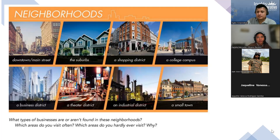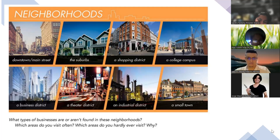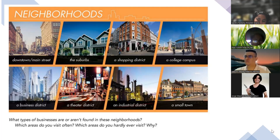A college campus — maybe restaurants inside the campus, cafeterias as well. A business district — because it's a business district. A theater district — a movie theater, et cetera. Exactly. An industrial district — maybe factories and manufacturers. That's right. And a small town...